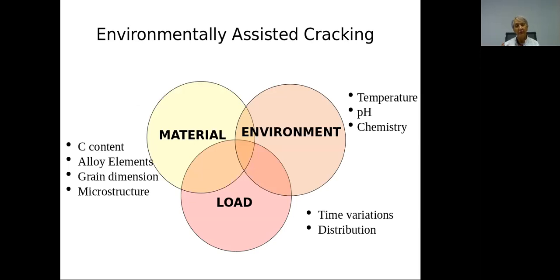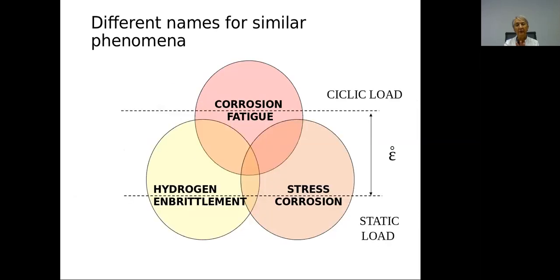People working a long time in this field usually prefer to speak about environmentally assisted cracking, which is not as precise a definition as stress corrosion, but it comes from three different kinds of parameters: material, environment, and load. Each of these three families of parameters can have many different aspects, which is why environmentally assisted cracking is a complex matter. We can also have different kinds of load — cyclic load or static load.